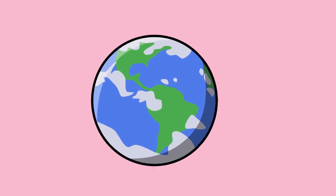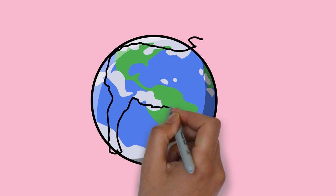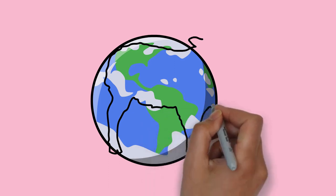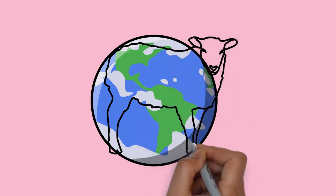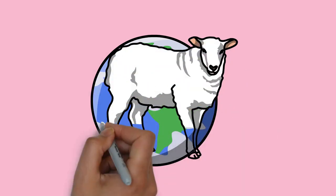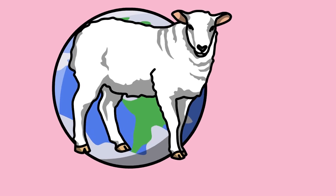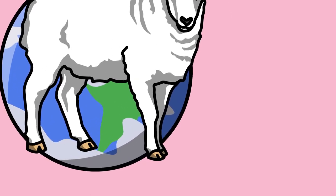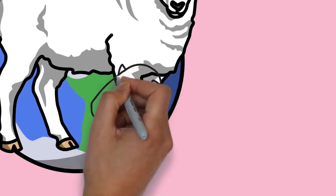Like all ruminants, sheep are members of the order Artiodactyla, the even-toed ungulates. Numbering a little over 1 billion, domestic sheep are also the most numerous species of sheep. An adult female is referred to as a ewe, an intact male as a ram, occasionally a tup, a castrated male as a wether, and a young sheep as a lamb.